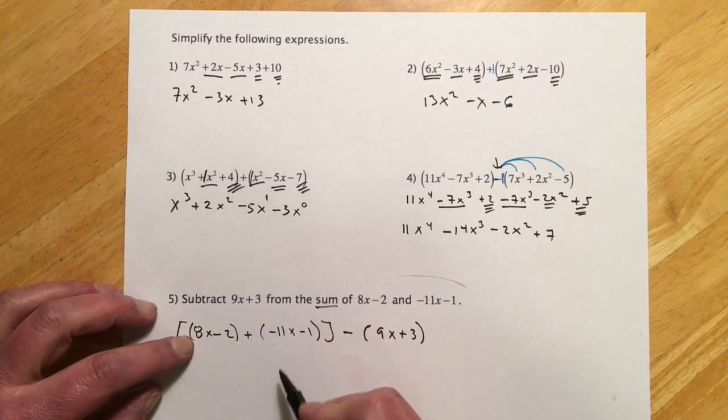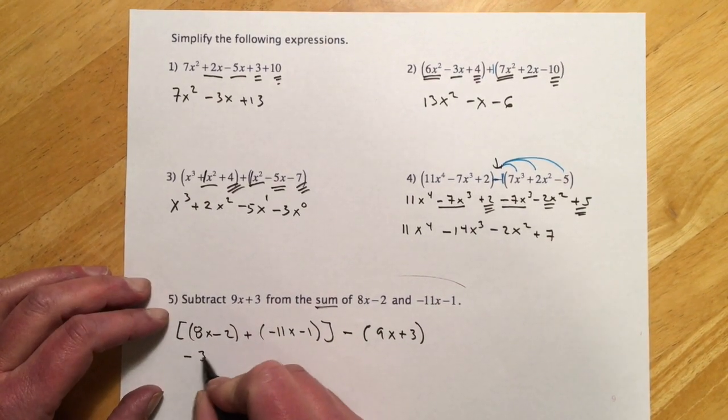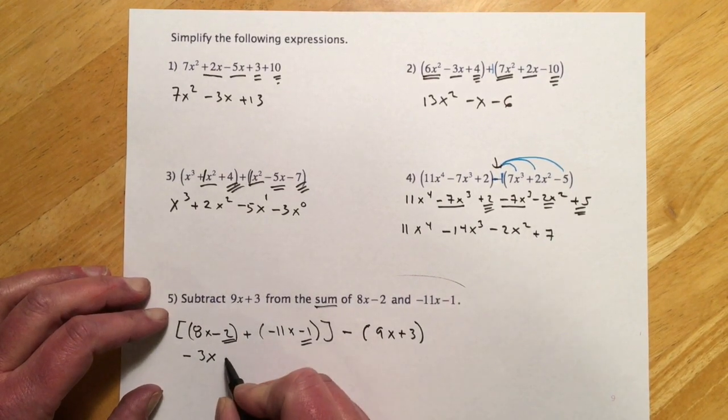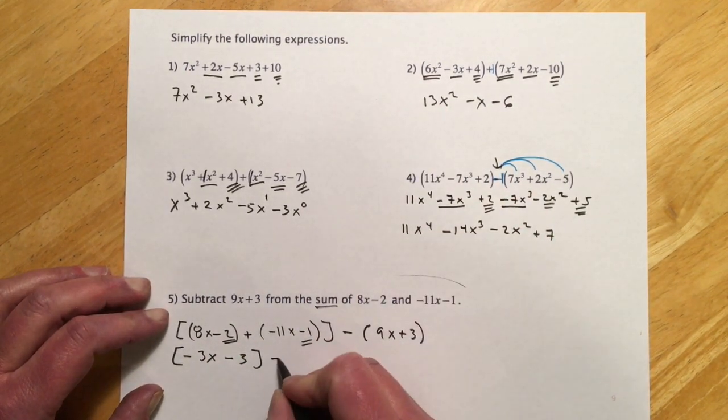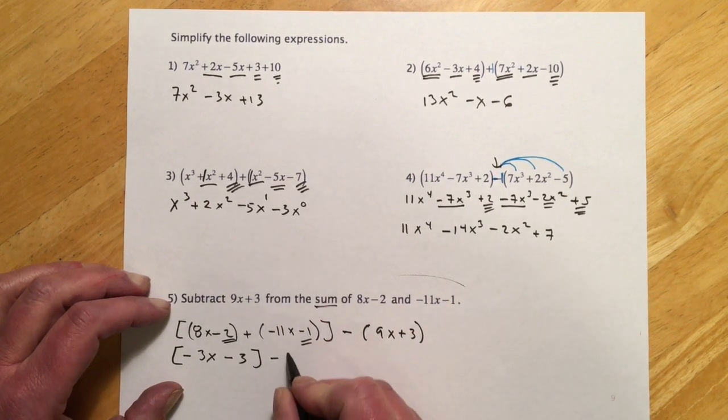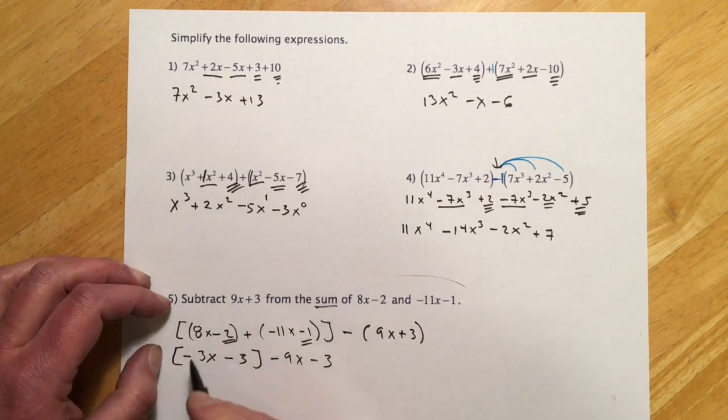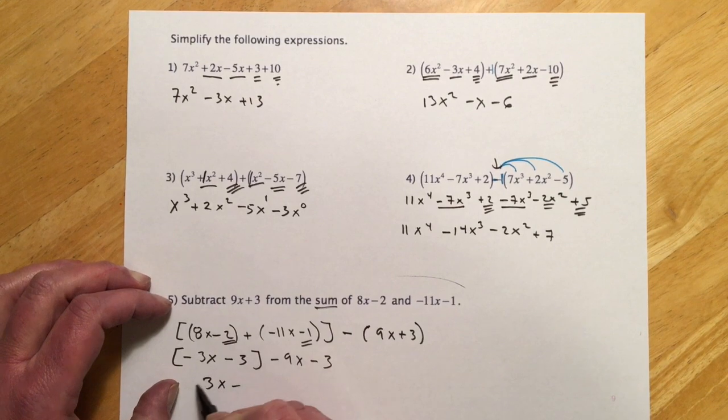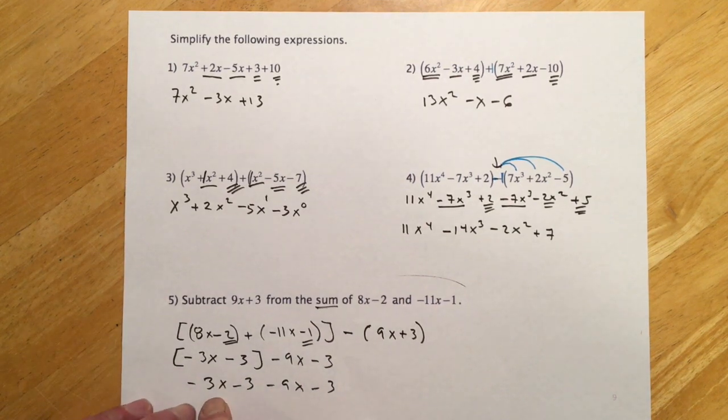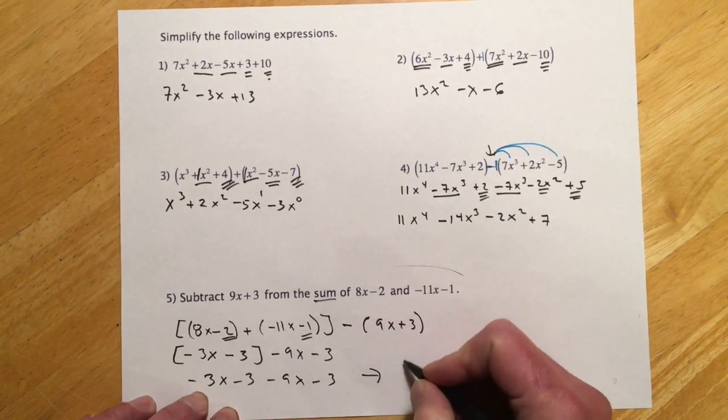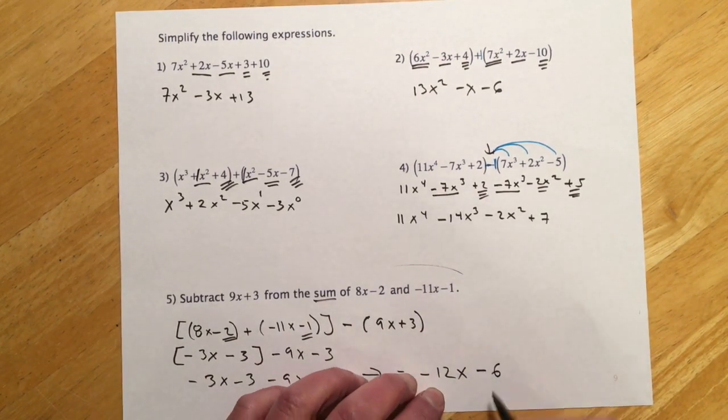So then I can put these ones together. So 8x minus 11x, so that's just going to be minus 3x, and then minus 2 minus 1, so that's another minus 3. So that's there, and then we're going minus this stuff, and I'll go ahead and distribute that sign. So minus 9x, and then minus 3. And then you kind of see these parentheses really aren't doing much. So negative 3x and then minus 9x, so that's going to equal negative 12x, and then down 3, down another 3, and minus 6.